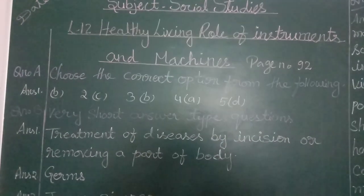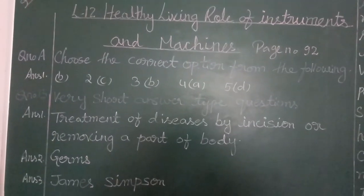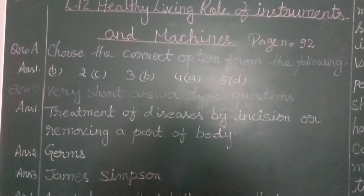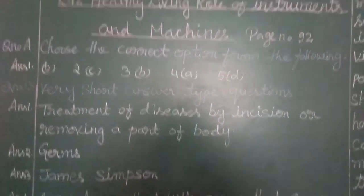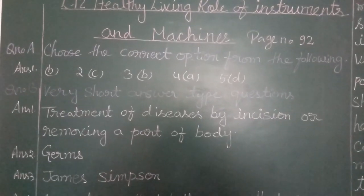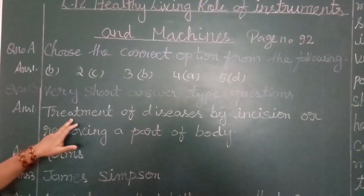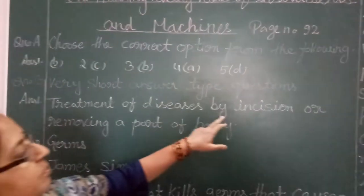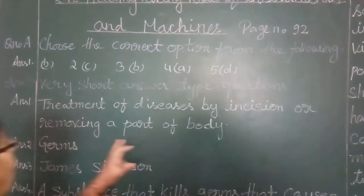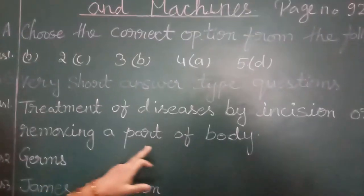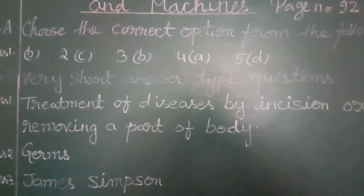Very short answer type questions. Question number 1: What do you know about surgery? Answer: Treatment of diseases by medicines or removing a part of the body is known as surgery.